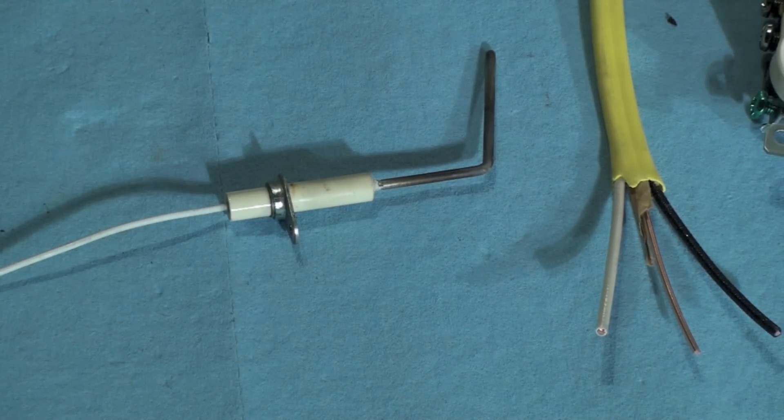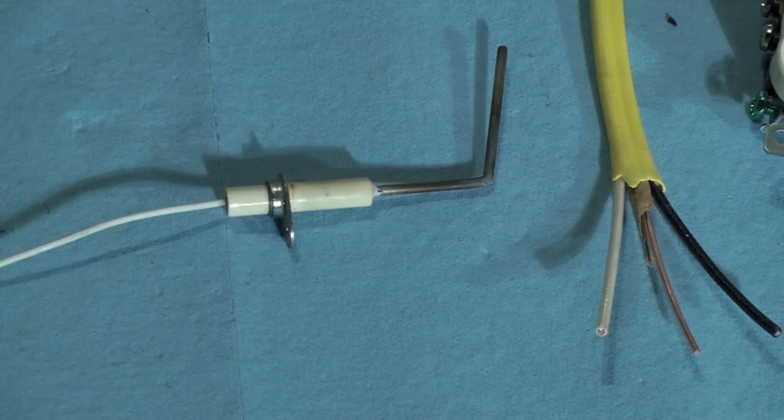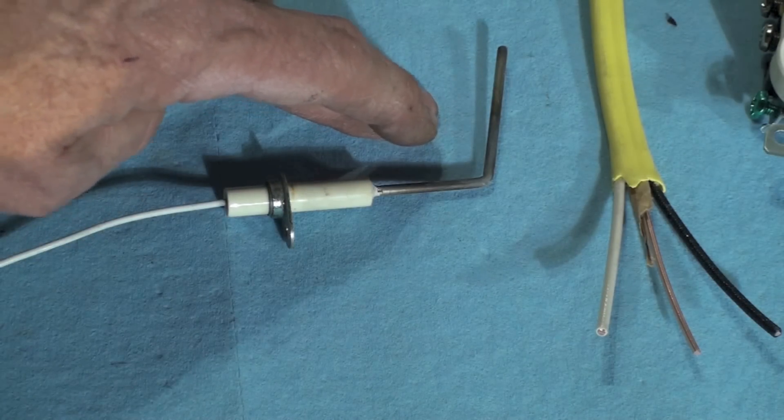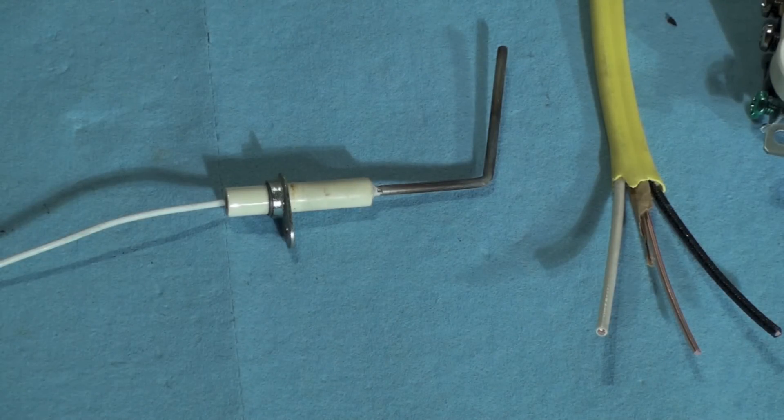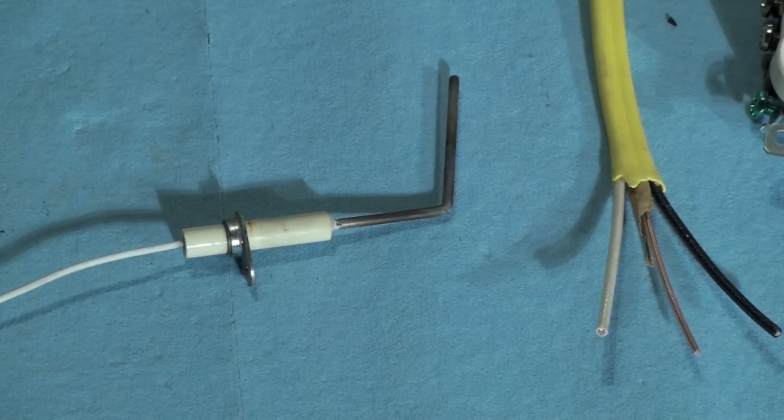But flame will rectify AC to DC. So I feed AC into this thing. The power comes up here, goes through the flame to the chassis or the body of the furnace. If it turns it to DC because the flame will rectify the current, if it turns it to DC, then it says yes we have a flame.